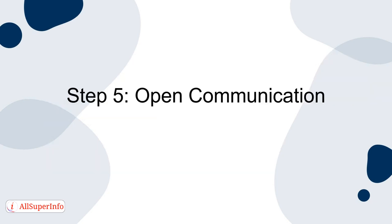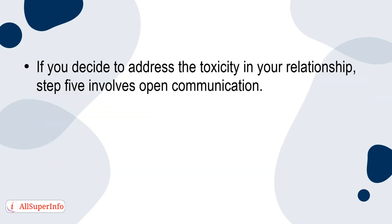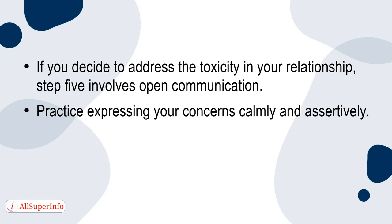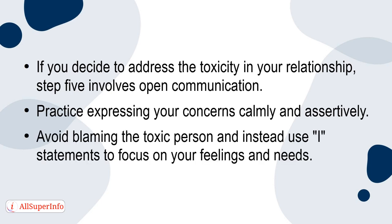Step 5: Open communication. If you decide to address the toxicity in your relationship, step 5 involves open communication. Practice expressing your concerns calmly and assertively. Avoid blaming the toxic person and instead use I statements to focus on your feelings and needs.